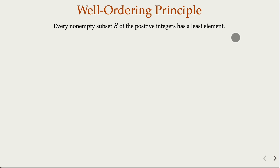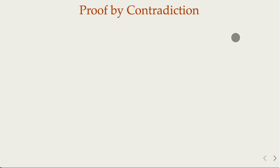We also want to prove by contradiction. So assume the square root of 3 is rational — by definition, that means it is the ratio of two integers p and q. Since the square root of 3 is positive, we assume p and q are both positive, which means square root of 3 times q equals the positive integer p.